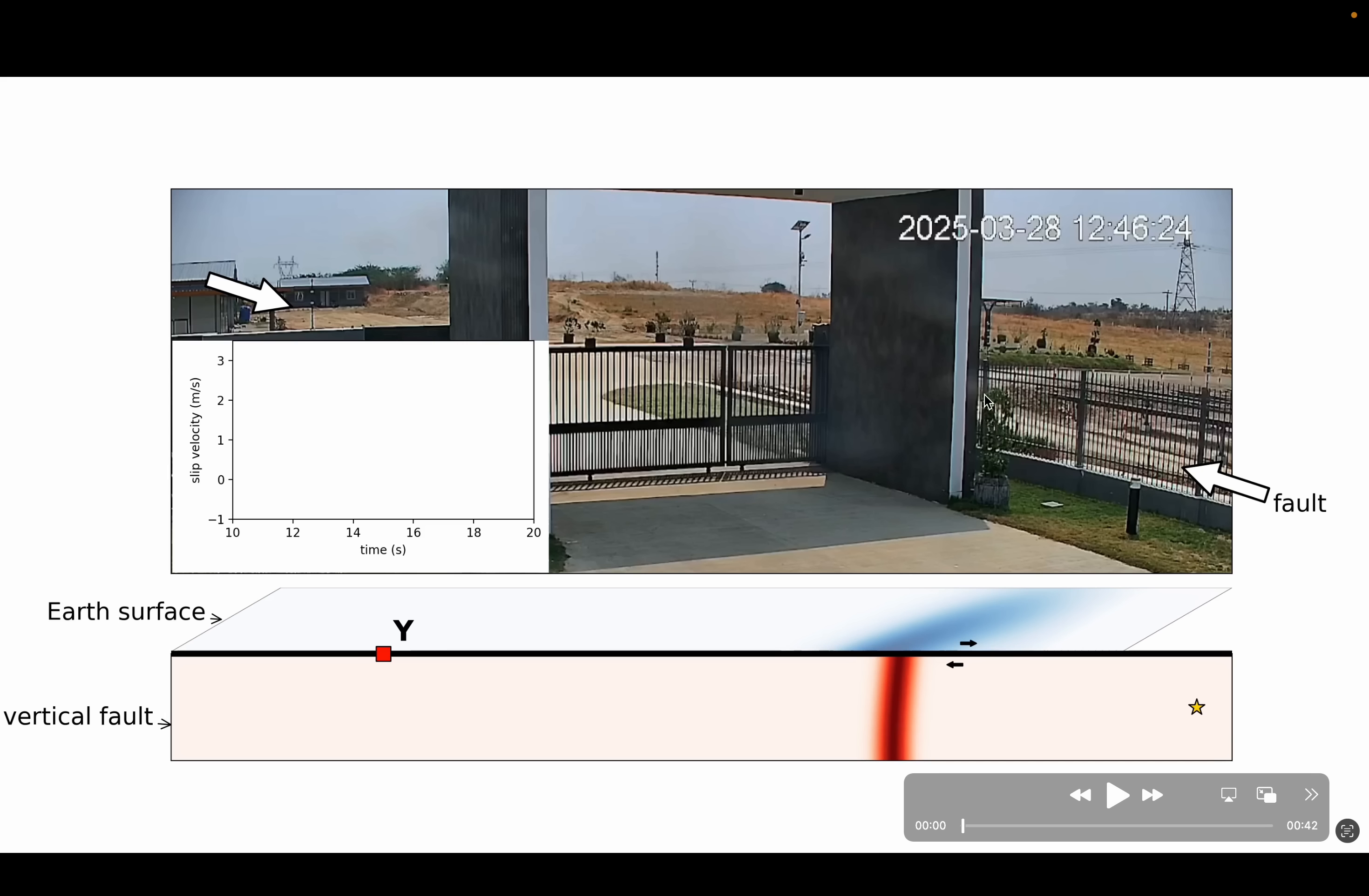So behind this fence and behind this archway and gate structure here in the foreground. Now that same fault is depicted in the cartoon below by this horizontal black line.